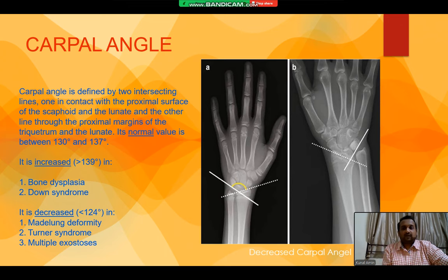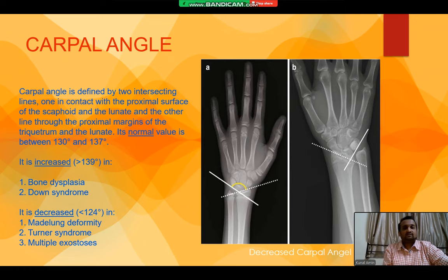Now we move on to talk about the carpal angle. The carpal angle is defined by two intersecting lines — one in contact with the proximal surface of the scaphoid and lunate, and the other line through the proximal margins of the triquetrum and the lunate. The normal value is between 130 to 137 degrees. When this value is increased to 139 degrees, it is seen in bone dysplasia and Down syndrome. When it is decreased to less than 124 degrees, it is seen in Merlung Deformity, Turner Syndrome, and multiple exostoses.